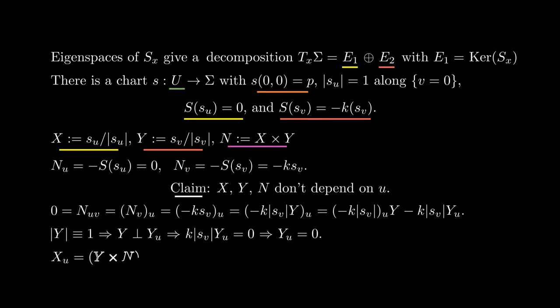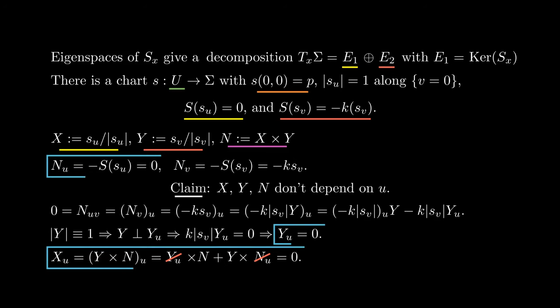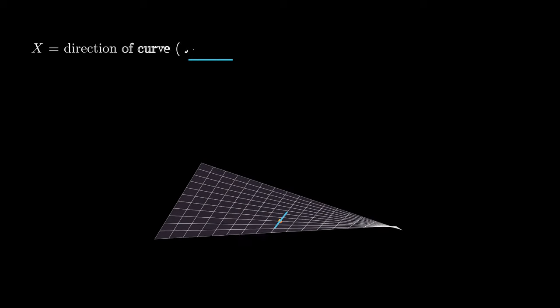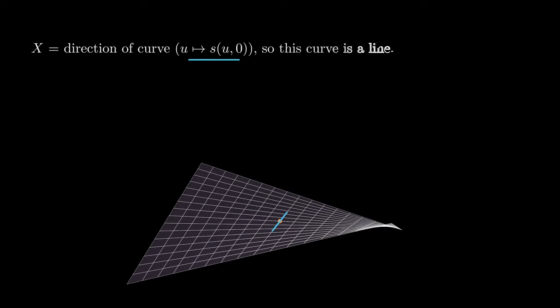Finally, x is plus minus the cross product of y and n, so its derivative with respect to u is also zero by the product rule. This concludes the proof that the vectors x, y, and n do not depend on u. Then x, the direction of the curve S, doesn't depend on u. This implies that this curve is actually a line, proving the first part of the lemma.